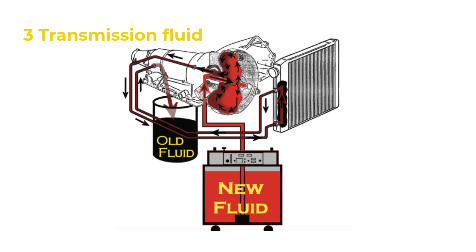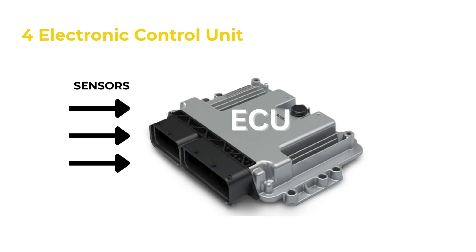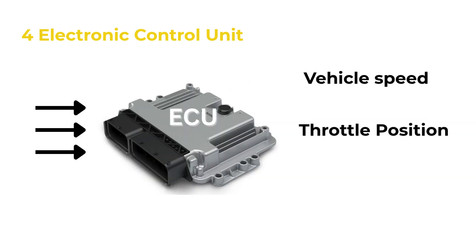The hydraulic system uses transmission fluid to operate internal valves, which control which clutches and bands are activated, directly influencing gear selection. The Electronic Control Unit, or ECU, is the brain of the transmission. It processes data from sensors such as vehicle speed, throttle position, and engine load, then decides when and how to shift gears for optimal performance and fuel efficiency.